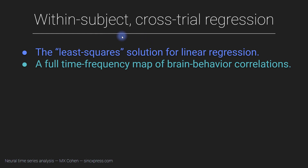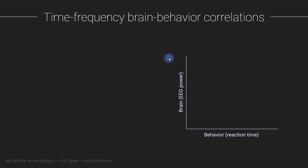It's just that you're looking at variance within a subject instead of variability over different subjects averaged in each subject. But anyway, that's just a matter of linguistics. So what I'm going to show you is how to do cross-trial regression using the least squares solution. Let me start by explaining the problem and why we need an approach like this.